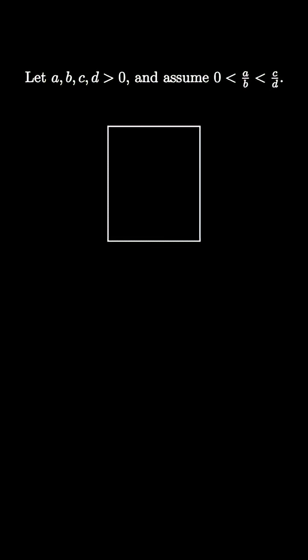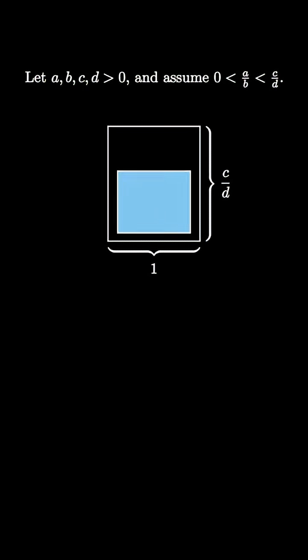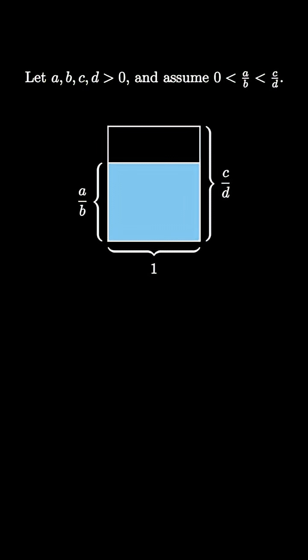Let A, B, C, and D all be positive real numbers and assume that A over B is less than C over D. Imagine a rectangle with width 1 by length C over D. By assumption, we can place a rectangle enclosing an area of A over B inside like this.